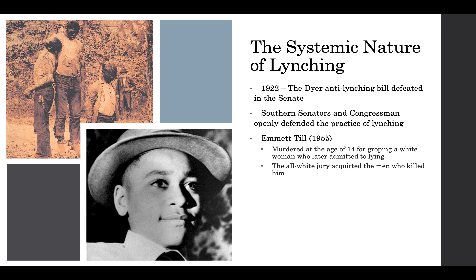Lynching was a systemic problem in the southern states. Various efforts to create laws against it at the national level failed, thanks to congressmen and senators who openly defended the practice and blocked bills that sought to address it. This is something that was actively sanctioned by state officials and even by people who represented those states in the national government. However, widespread attention was brought to the issue due to the lynching of Emmett Till, a 14-year-old boy accused of groping a white woman in a grocery store. This woman later admitted to lying about the incident, but Till was quite brutally murdered, and the two white men accused of killing him were acquitted by an all-white jury. The first major civil rights protests followed pretty soon after this event.